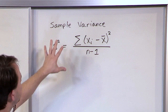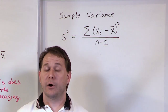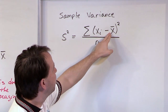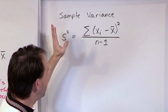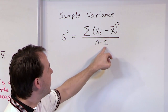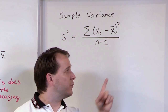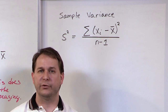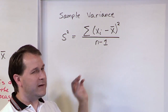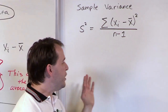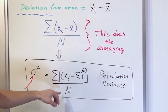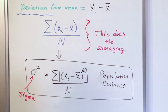For population variance, we divide by N — the total number of people in the population — and we use mu, the population mean, not x-bar. For sample variance, we divide by n minus 1. When you have a sample, you use n minus 1; when you have the entire population at your disposal, you divide by N.